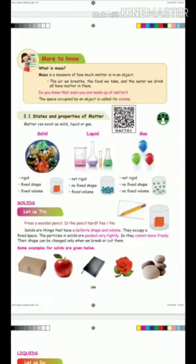First, I will tell about solid. What is the character of the solid? It is rigid, it has fixed shape, fixed volume. Next will be the liquid: not rigid, no fixed shape, no fixed volume. And the gas: not rigid, no fixed shape, no fixed volume.